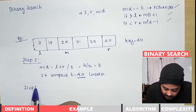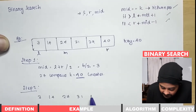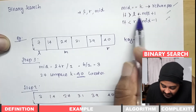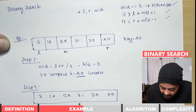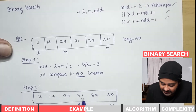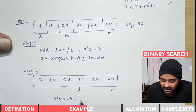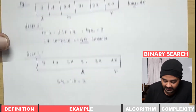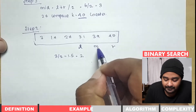In step 2, with the same list (3, 14, 27, 31, 39, 40), L has changed to mid plus 1, which is 31. Now L is 31 and R is 40, giving us 3 elements. 3 divided by 2 is 1.5; rounding up gives 2, so the mid element is now 39.